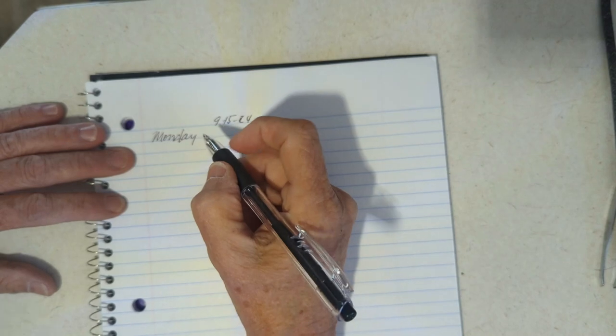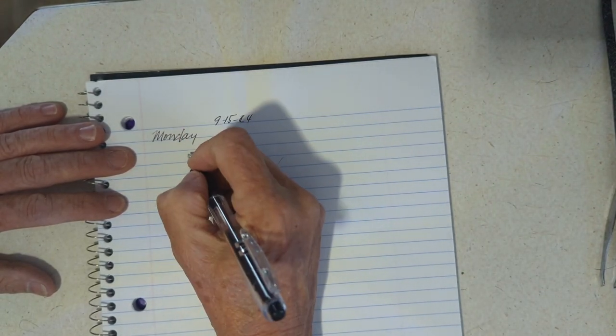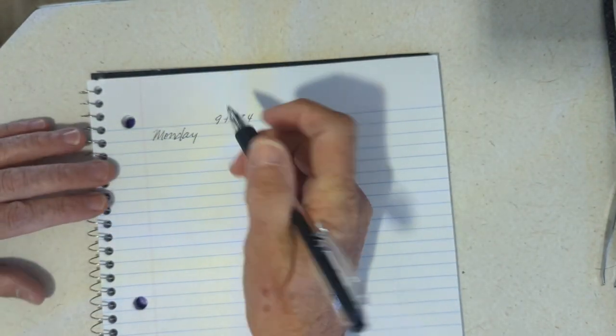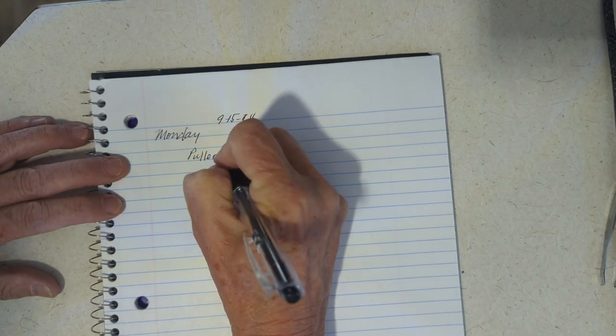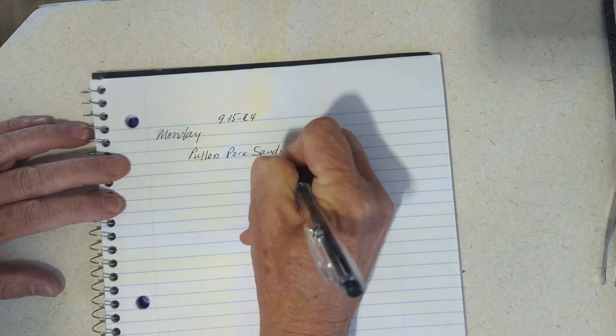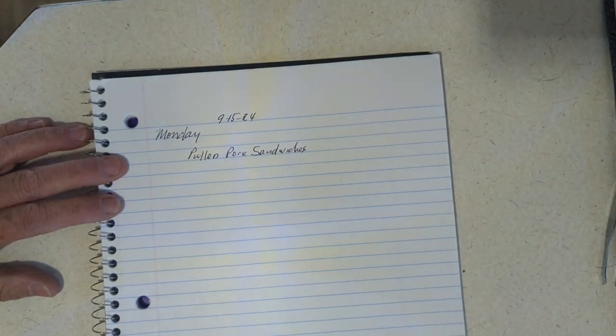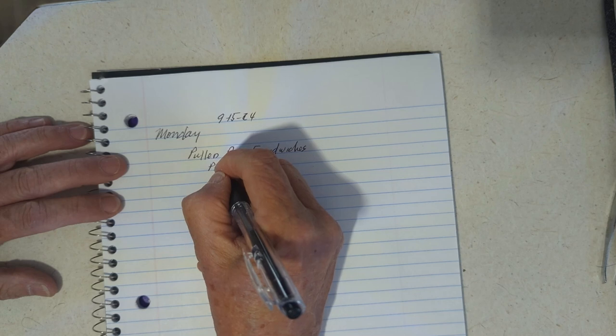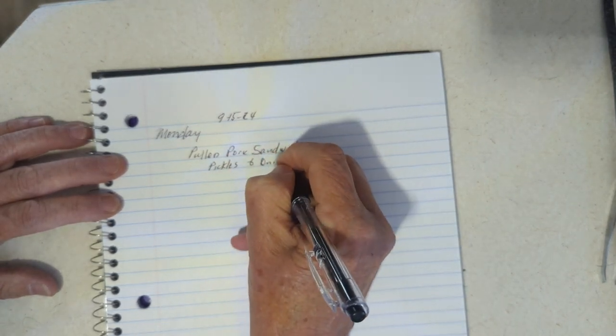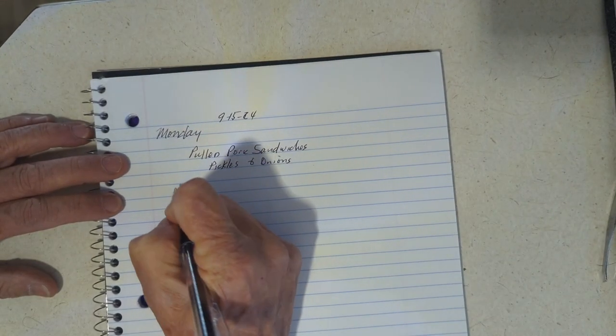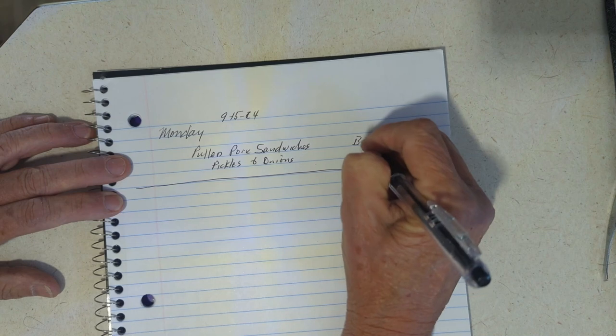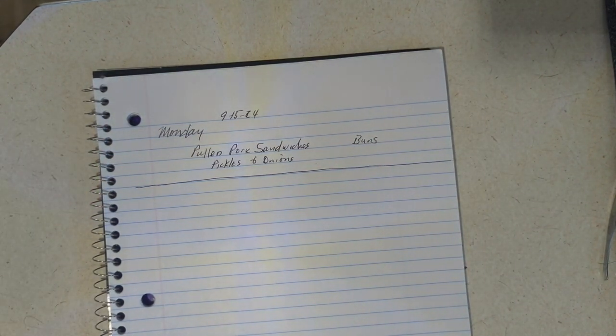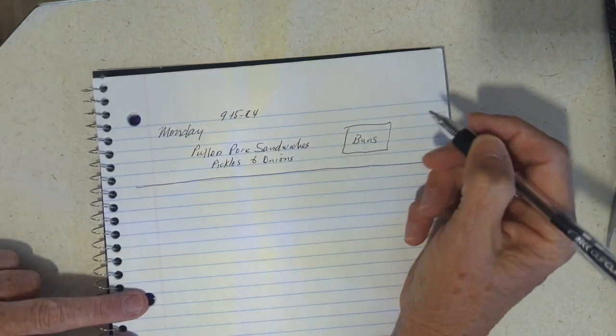Okay, so I bought another one of those big pulled pork shoulders, cut it up and froze it, so I kept one out. So we're going to have pulled pork sandwiches, and the only thing I'm going to go with it is pickles, which I have, and onions, which I have. So to do that, I'm going to need to buy buns.